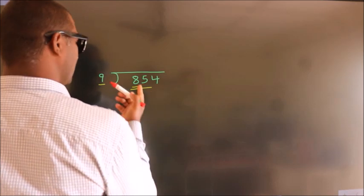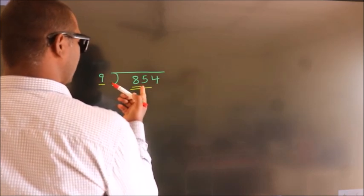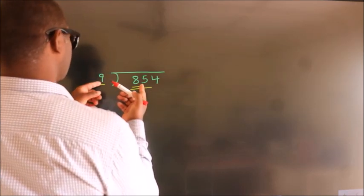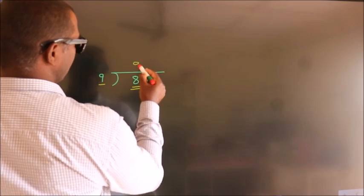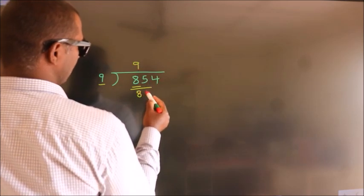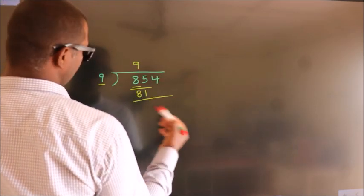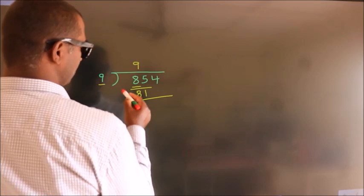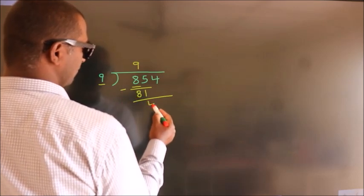85. A number close to 85 in the 9 table is 9 nines, 81. Now we subtract and get 4.